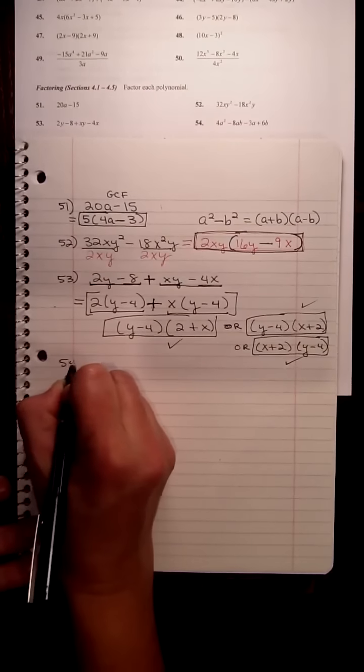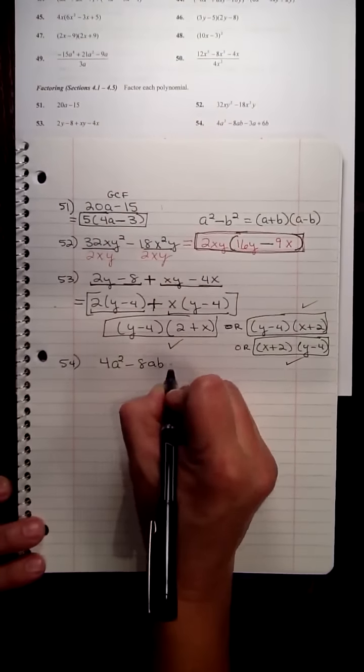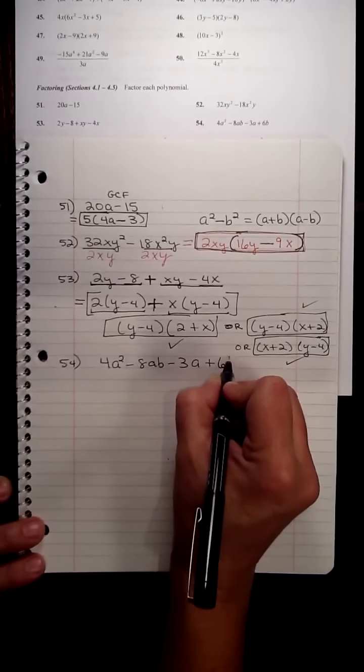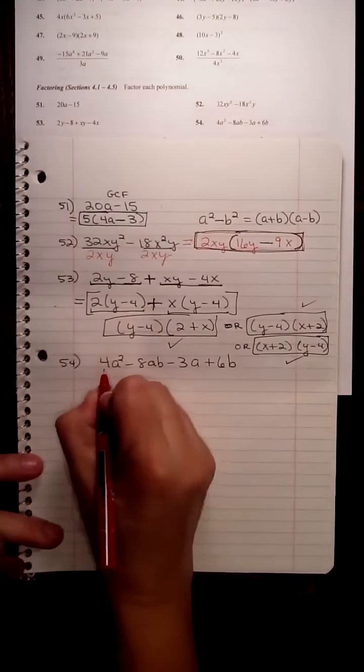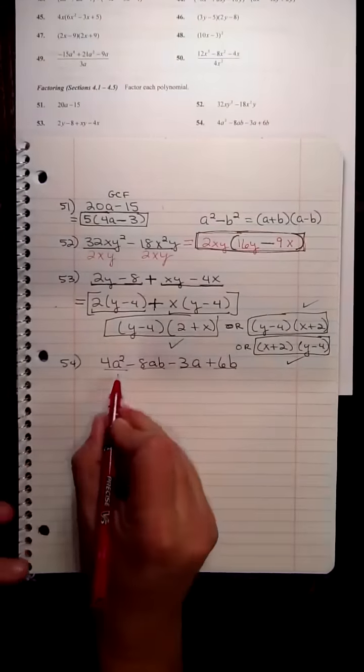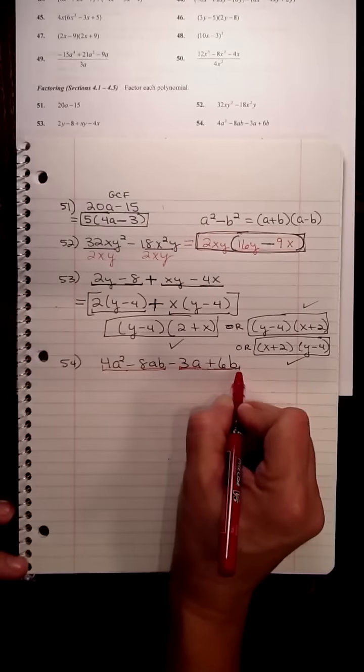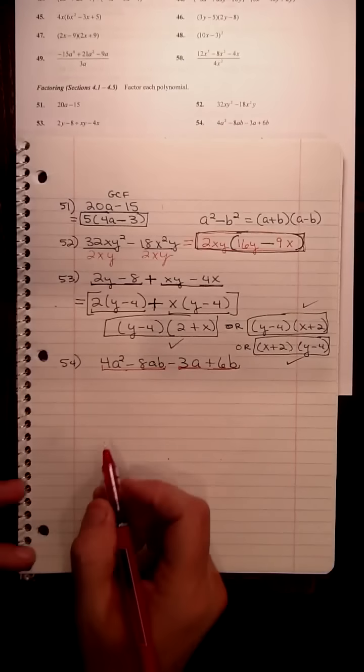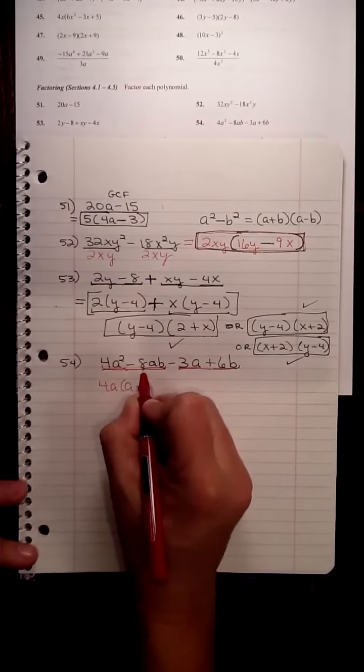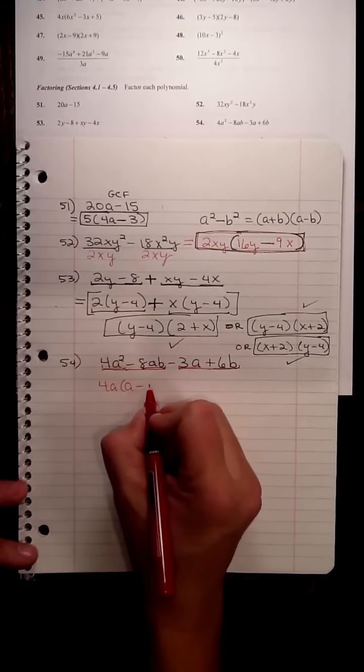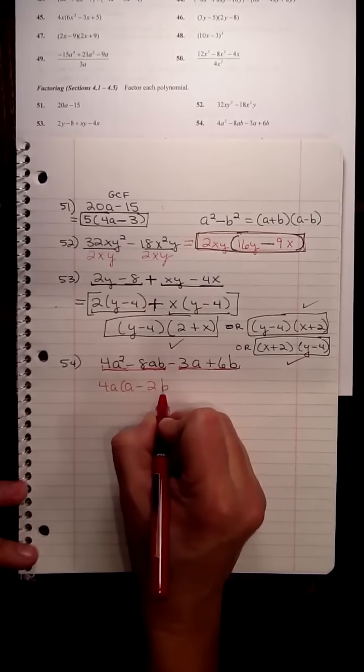Fifty-four, which has 4a squared minus 8ab minus 3a plus 6b. Number four does not have a common factor for all four of these. So again, we're going to have to look at the first two terms separately from the second two. And both of the first two terms are divisible by 4a, and so when you divide by 4 and a, you get an a left. And when you divide the second term by 4 and a, you have 2b left.